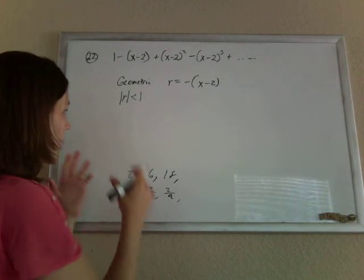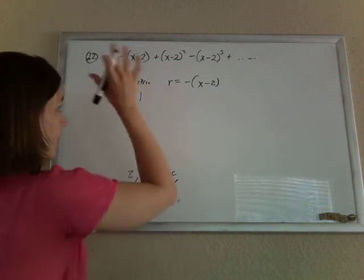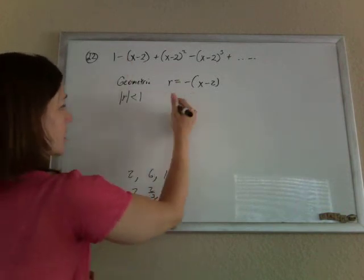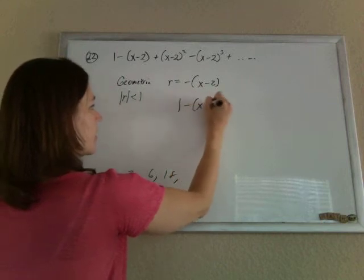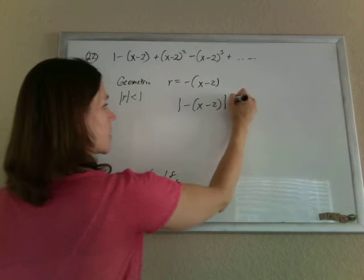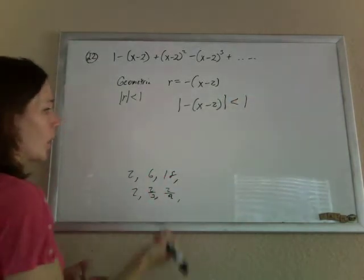So we need to make it, if they want the x's for which this thing is going to converge, we need to make it so that the absolute value of the common ratio is less than 1.